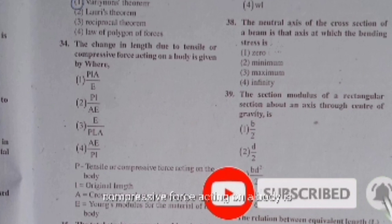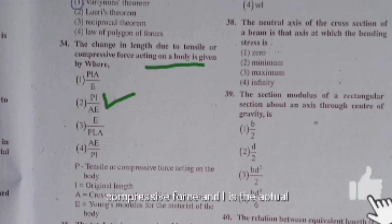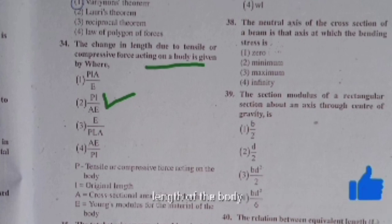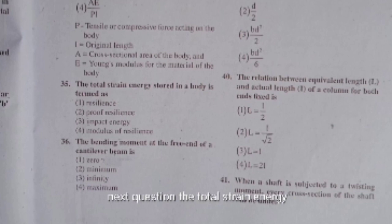The change in length due to tensile or compressive force acting on a body is given by PL/AE, where P is the force, L is the actual length, A is the area, and E is Young's modulus. The total strain energy stored in a body is termed resilience; the maximum strain energy stored up to the elastic limit is termed proof resilience.